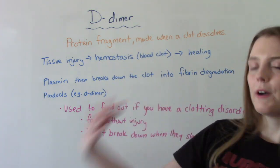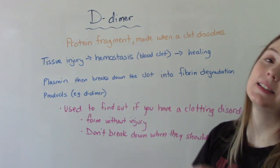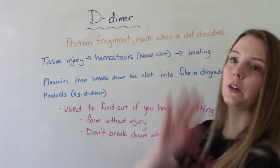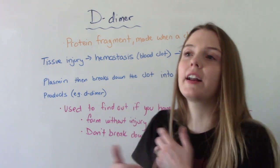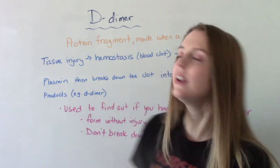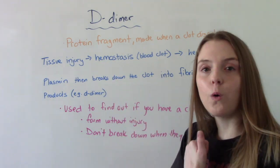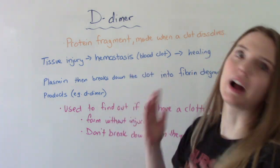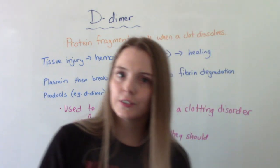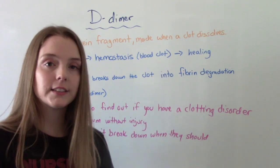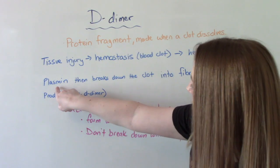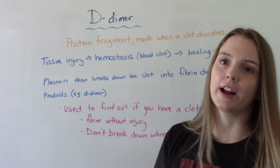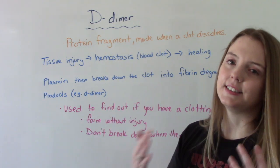So first of all, what is it? It is a protein fragment that is made when a blood clot dissolves in the body. If we think about a normal injury that occurs — a tissue injury, maybe a cut on your arm — what happens right away is hemostasis. A blood clot is formed to prevent you from bleeding too much. That's great in the moment, but we don't need it forever. Once it's served its purpose and the tissue has healed, it needs to go away. So there's something called plasmin. This comes and breaks down that clot into protein fragments, an example of which is D-dimer.